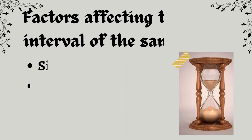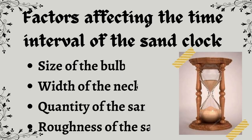Next are the factors that affect the time interval of the sand clock. They are: the size of the bulb, the width of the neck, the quantity of the sand, and the roughness of the sand.